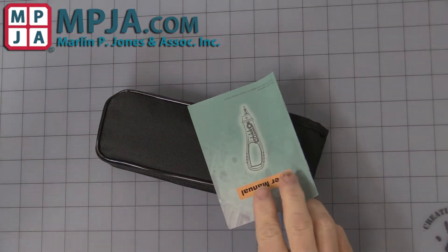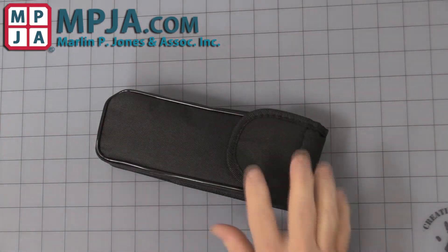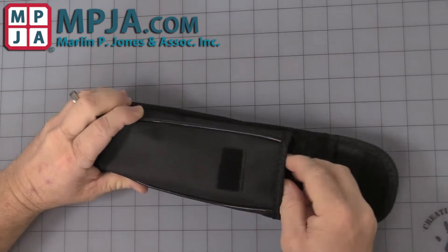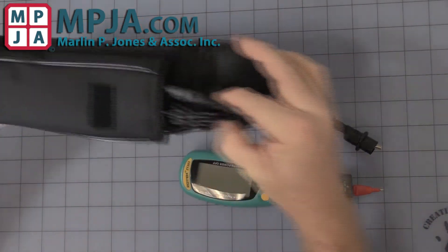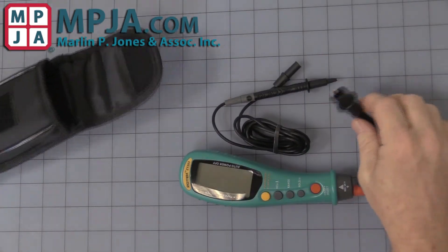It comes with a little manual, comes with a little pouch, the meter itself, probe and alligator clip.